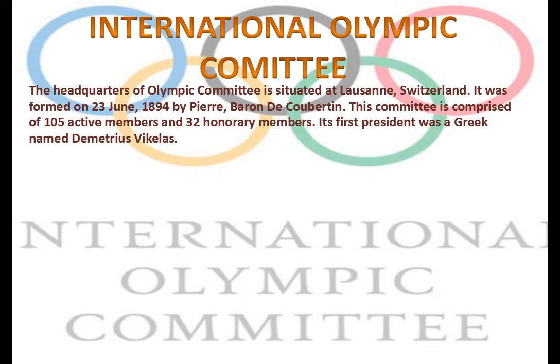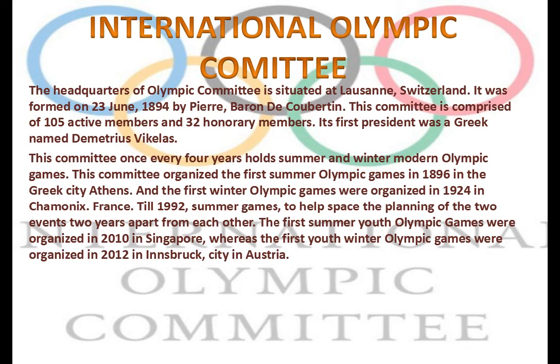This committee is comprised of 105 active members and 32 honorary members. Its first president was a Greek named Demetrius Vikelas. This committee holds summer and winter modern Olympic Games once every four years. The committee organized the first summer Olympic Games in 1896 in the Greek city of Athens, and the first winter Olympic Games were organized in 1924 in Chamonix, France.